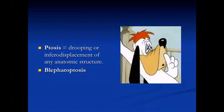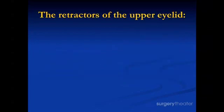By definition, ptosis means drooping or inferior displacement of any anatomical structure. You can have blepharoptosis, which means droopy eyelids. You can have ptosis of the breast, ptosis of any body parts — and that's what it means.